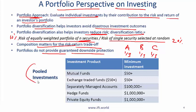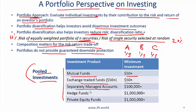Since portfolios are so important, we have several investment options called pooled investments. The examples include mutual funds and exchange traded funds, which typically require a small minimum investment, as well as separately managed accounts, hedge funds, and private equity. Hedge funds and private equity are covered in detail in alternative investments, but we'll touch on them here as well.